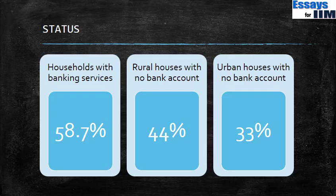Households with banking services amounted to around 60%. Rural households with no bank account amounted to 44% and urban households with no bank account is 33%. So as you can see, it was a very sorry state of affairs as far as financial inclusion in terms of opening of bank accounts was concerned. A lot of people in India had no access to bank accounts.